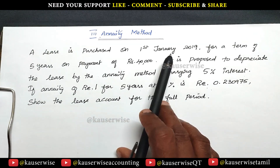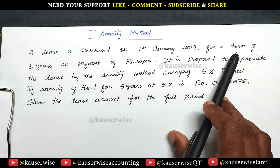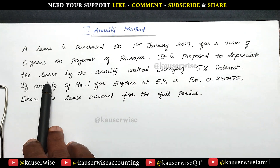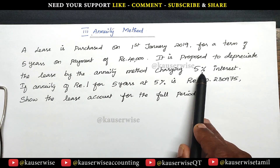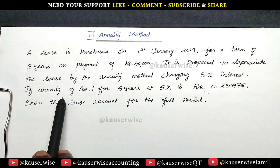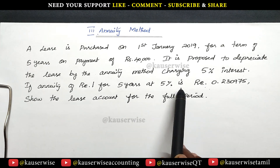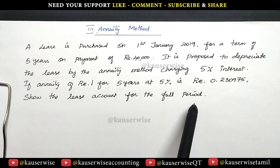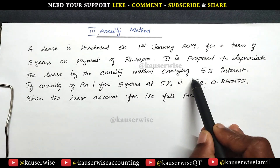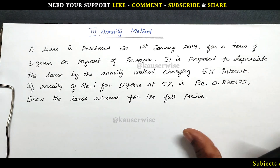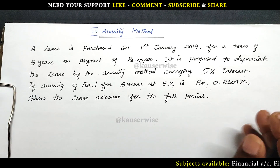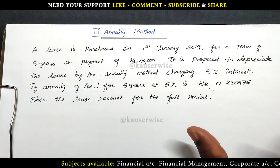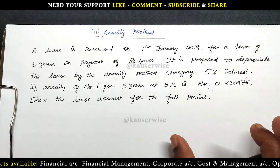A lease is purchased on 1st January 2019 for a term of 5 years on payment of rupees 40,000. It is proposed to depreciate the lease by the annuity method charging 5% interest. The annuity of rupee 1 for 5 years at 5% is rupee 0.230975. Show the lease account for the full period. The annuity factor will be given in the problem — you need not calculate anything separately.